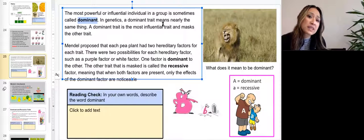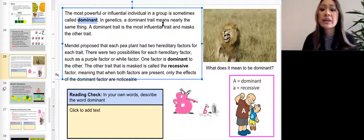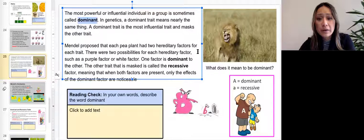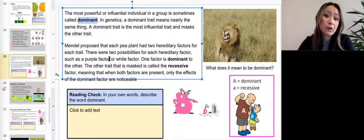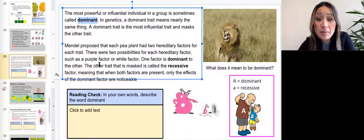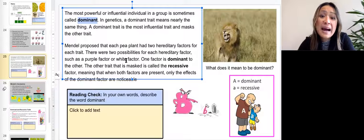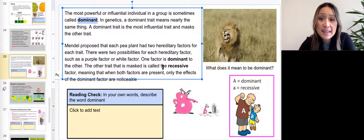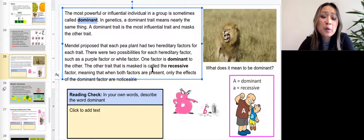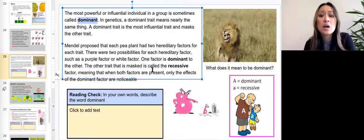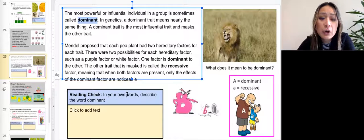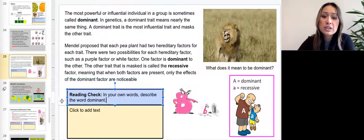And so the most powerful or influential animal in a group is sometimes called dominant. In genetics, a dominant trait means nearly the same thing. A dominant trait is the most influential trait and it will mask the other trait. Mendel proposed that each pea plant had two hereditary factors for each trait. There were two possibilities for each hereditary factor, such as purple flower, a purple factor, or white factor. One factor is dominant to the other. The other trait is masked and is called recessive. It's called the recessive factor. Meaning that when both factors are present, only the effects of the dominant factor are noticeable. And so in your own words, describe the word dominant.